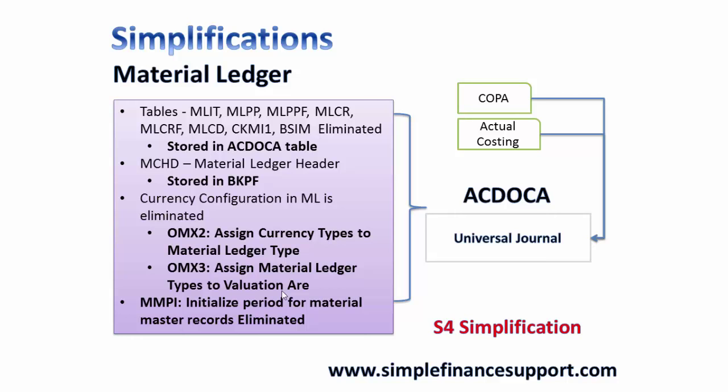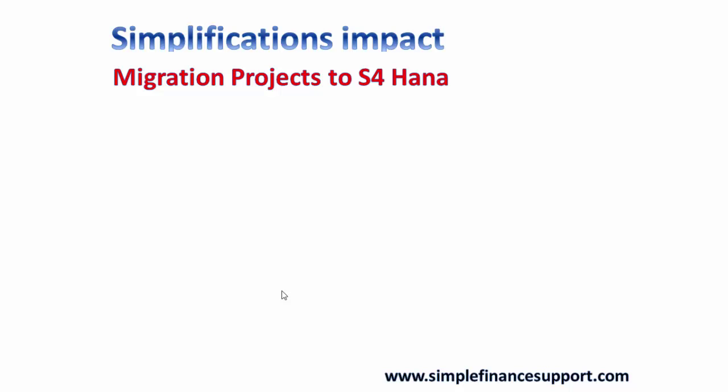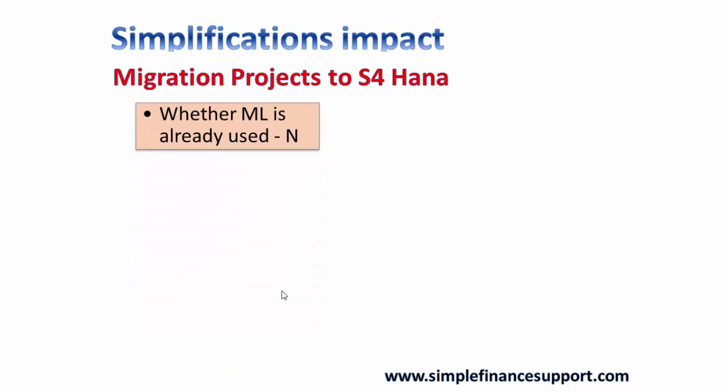For migration projects going from ECC to SAP S/4 HANA, the material ledger will be activated. The first thing you need to determine is whether you already have material ledger active — if you already have ML you have a different migration path, and if you don't have ML you have a different path. There may also be complex situations, such as one plant having material ledger and another not, and everything is now getting merged into S/4 HANA's ACDOCA universal journal table.